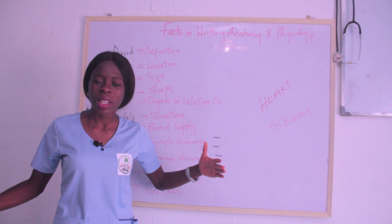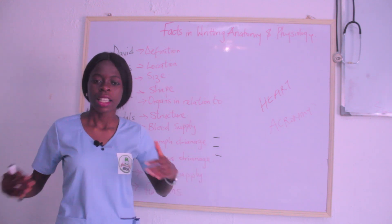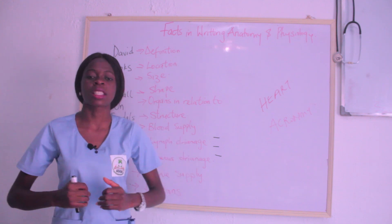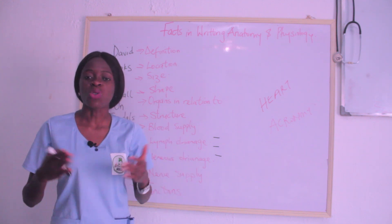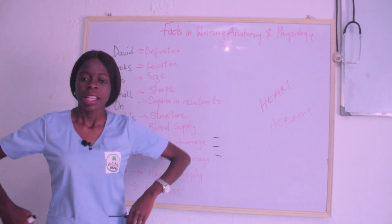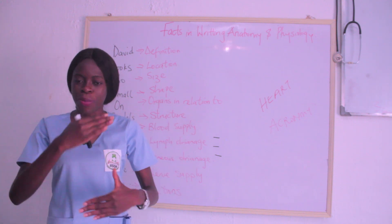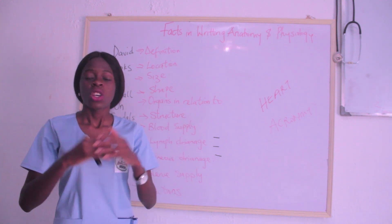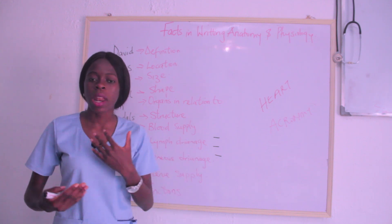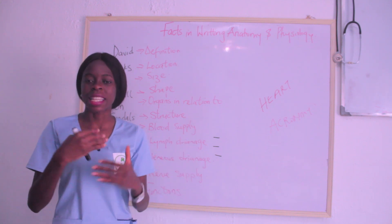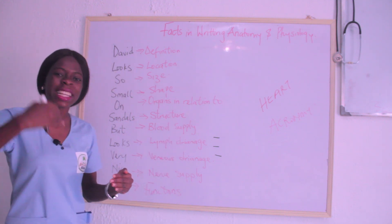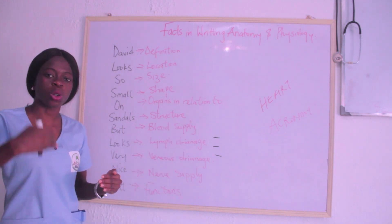Anteriorly, at the front side of the heart, you have the sternum, the ribs, and the intercostal cartilages. Posteriorly, at the back side of the heart, you have the trachea, the bronchi, and the oesophagus. So O stands for Organ in Relation.